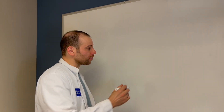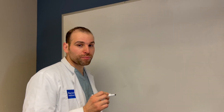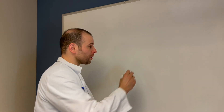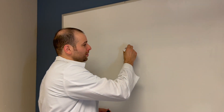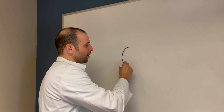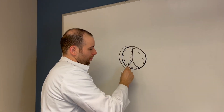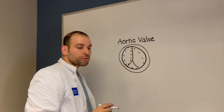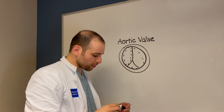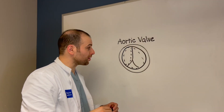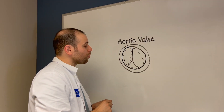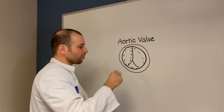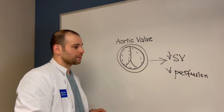Today we'll be talking about a very important congestion parameter, and that is the aortic valve. It is very important to understand the importance of obstruction at the level of the aortic valve.